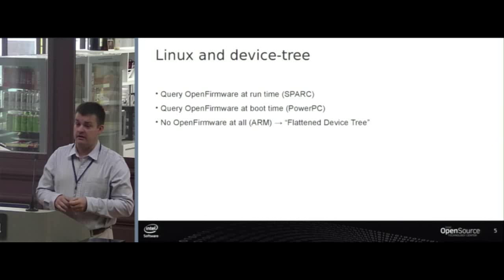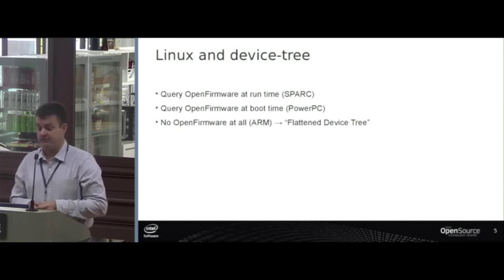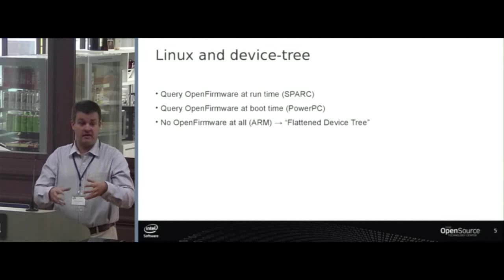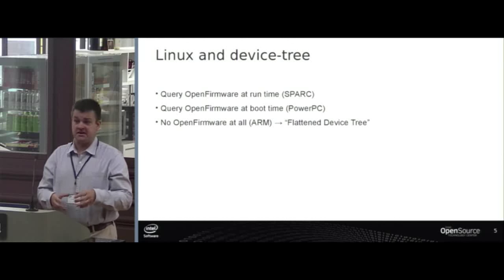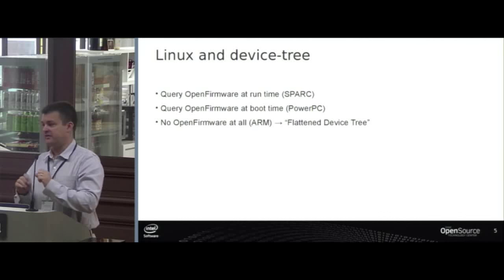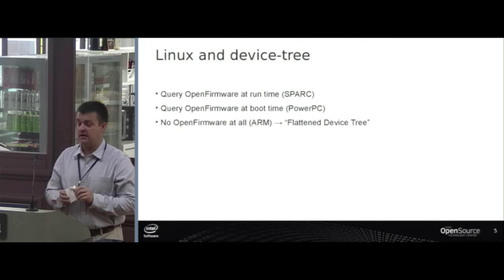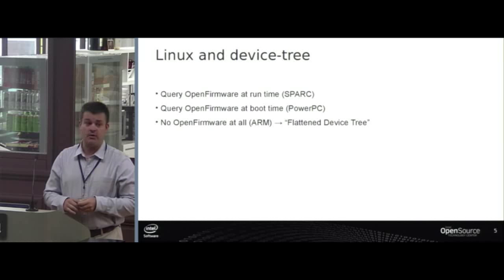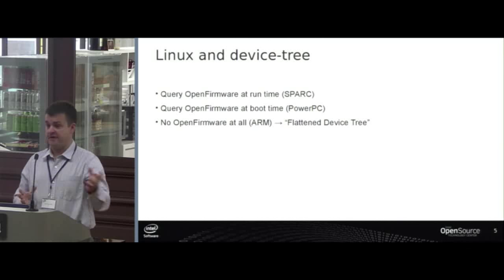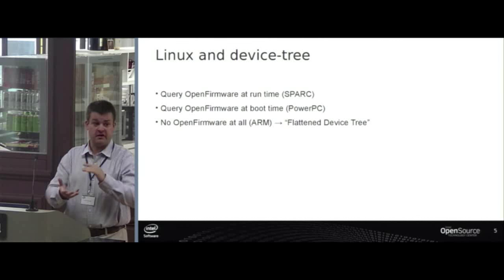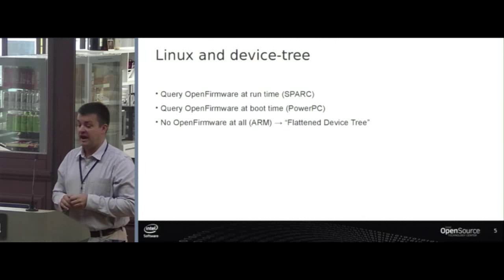Typically on embedded systems now — ARM systems mostly — there is no OpenFirmware. We're not sucking device tree properties from a real OpenFirmware implementation. But still we have this flattened device tree blob which describes all the devices. There is a specific binary format for that and a compiler which will take it from a human-readable format into the blob that the kernel will read. So now we have the bootloader or the firmware providing this big binary blob of data with all the properties, telling us what devices are where in the system and how they are interconnected.